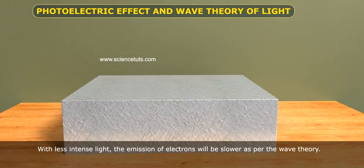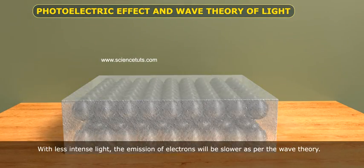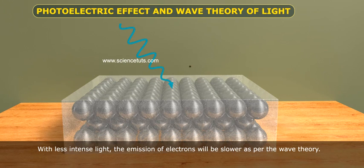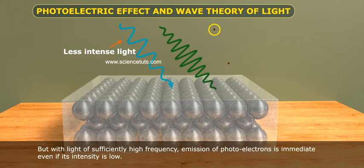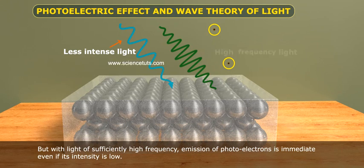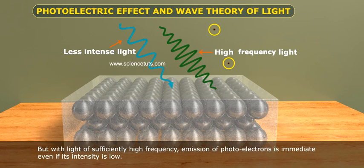With less intense light, the emission of electrons will be slower as per the wave theory. But with light of sufficiently high frequency, emission of photoelectrons is immediate even if its intensity is low.